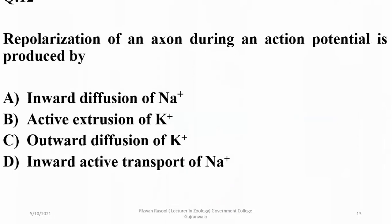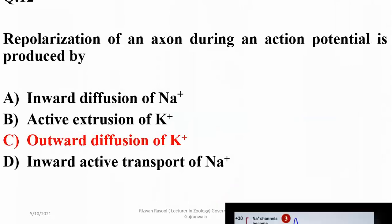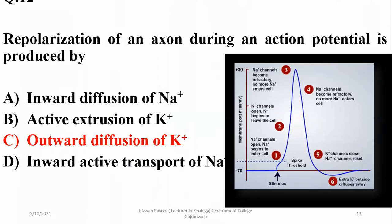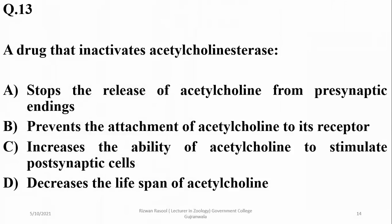Repolarization of an axon during an action potential is produced by the outward diffusion of potassium ions. Potassium ions move out, and the depolarized neuron comes back towards polarization — this is called repolarization.